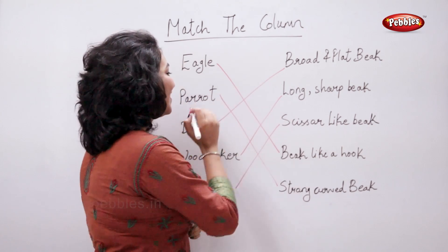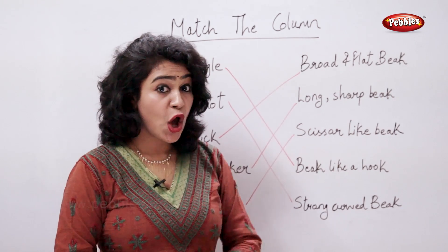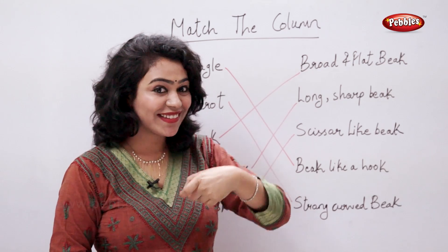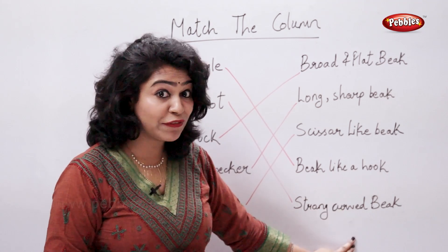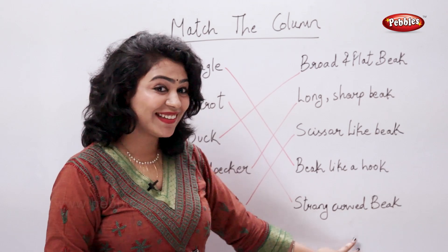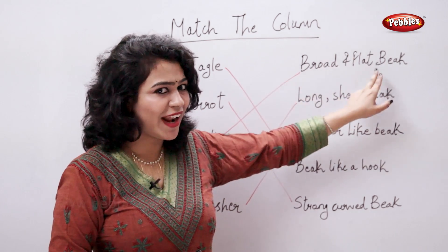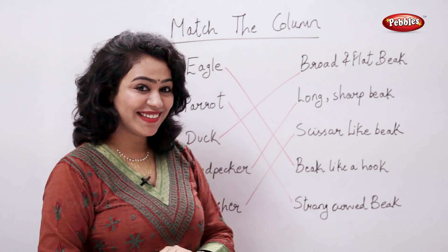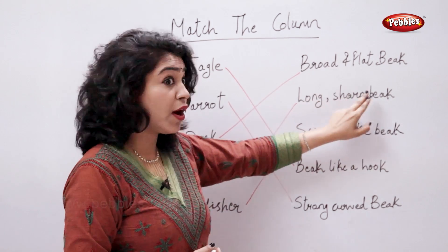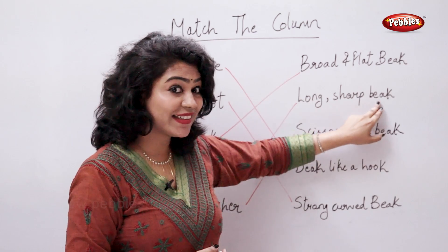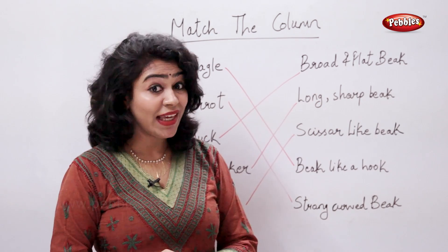Eagle has a beak like a hook. Parrot has a strong and curved beak. Duck has a broad and flat beak. Woodpecker has a long and sharp beak. Kingfisher has a scissor-like beak.